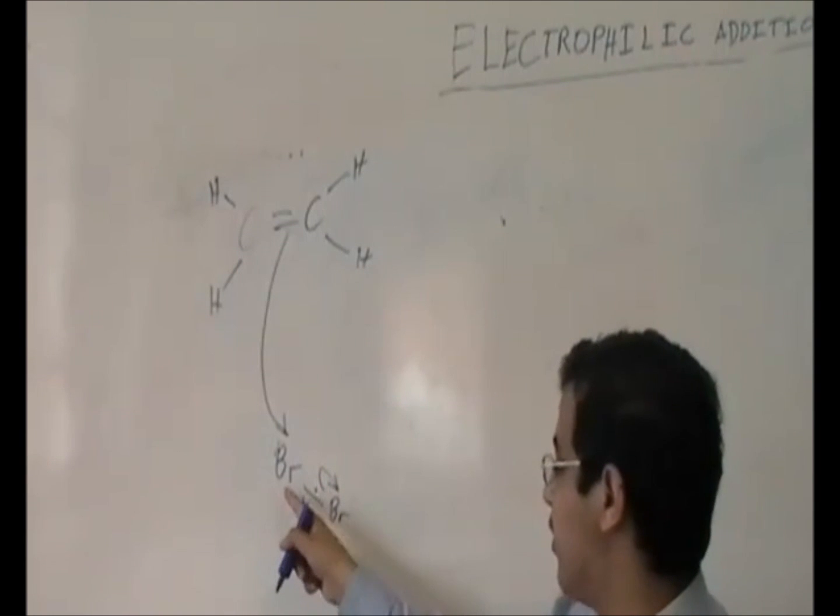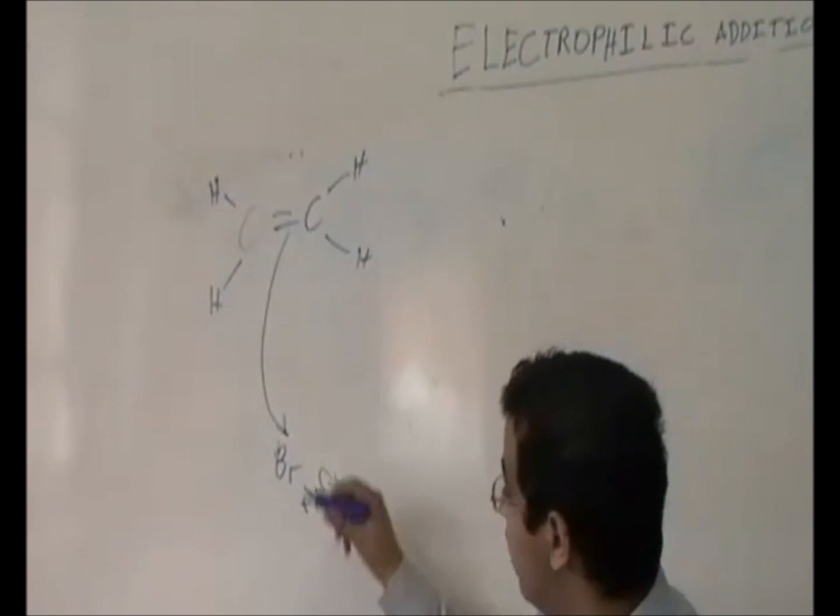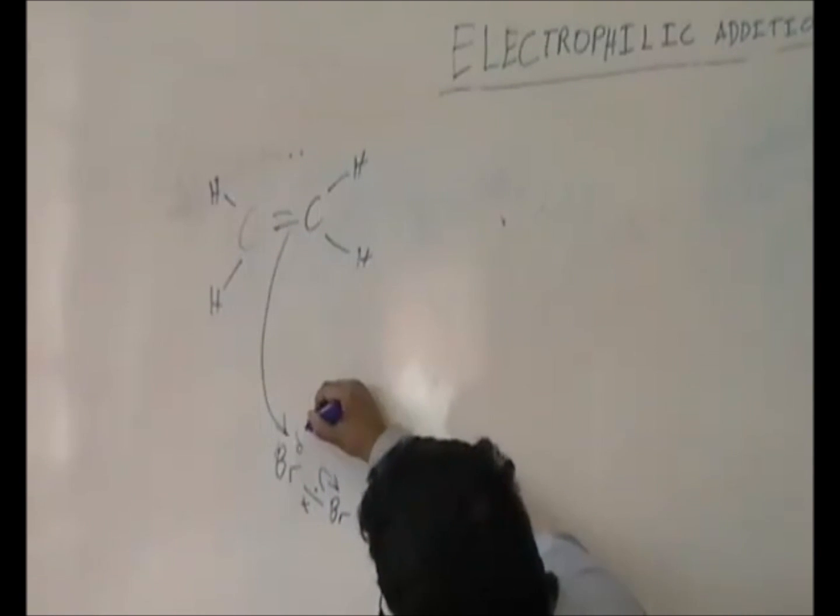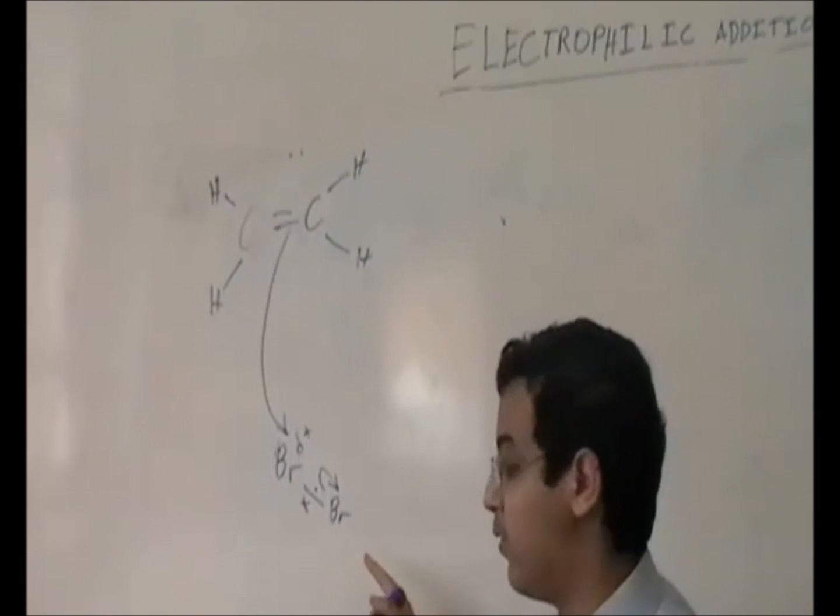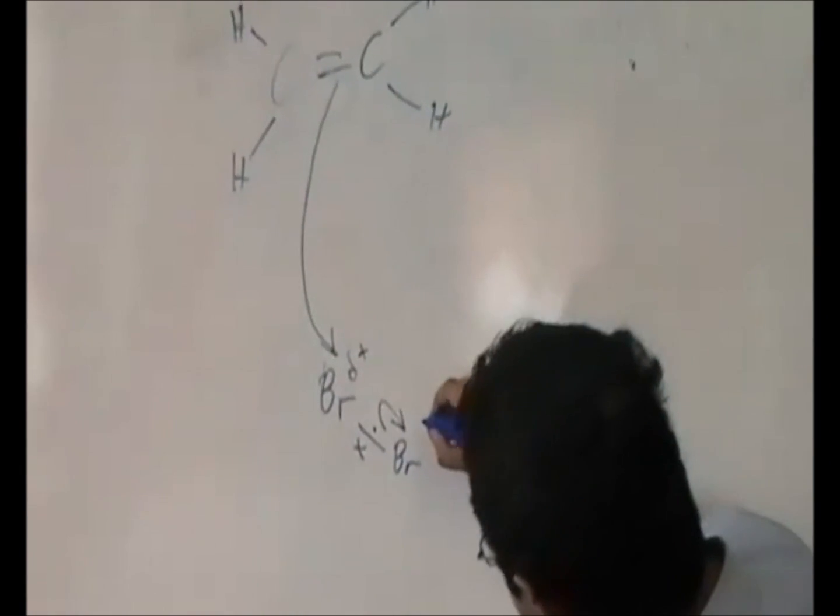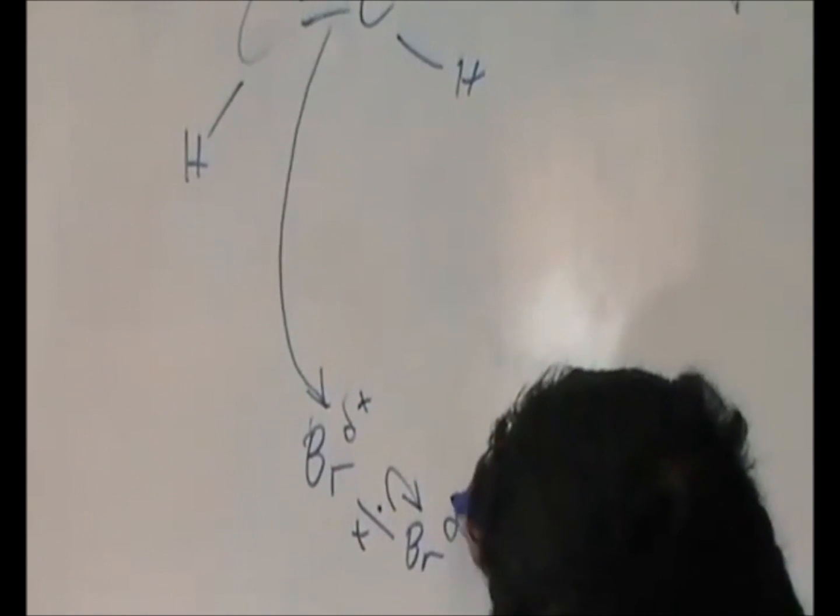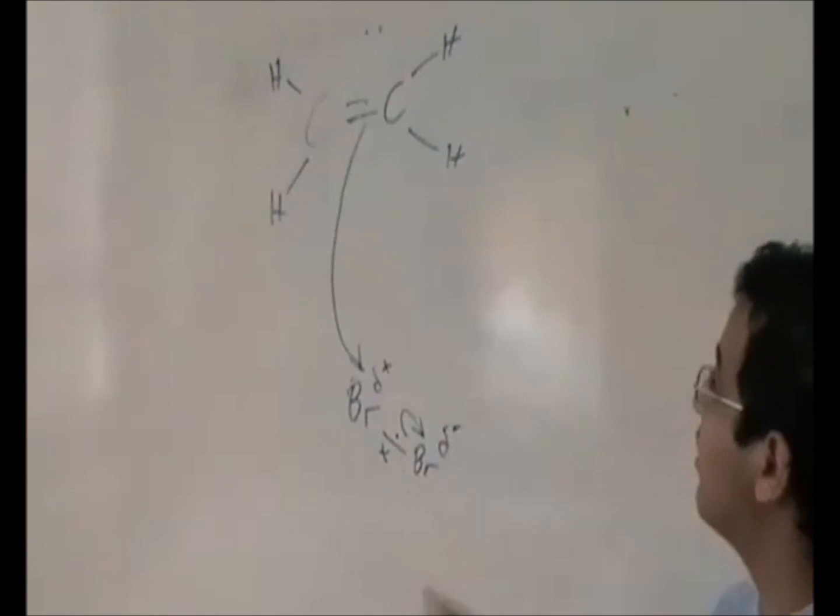As a result of this bromine losing the influence of the bond, it becomes slightly positive. And because this has gained more influence from the electron bond, so technically gained an electron it didn't have before, it becomes delta negative, which means partially negative. Delta positive means partially positive.